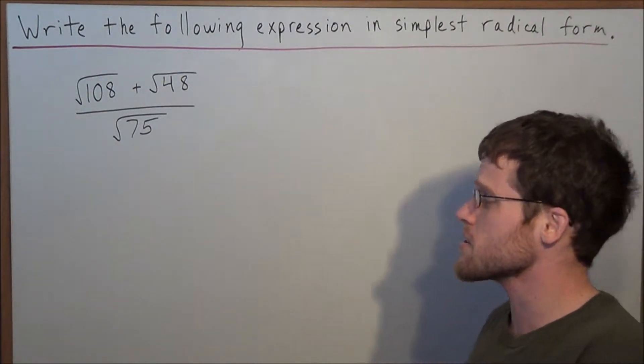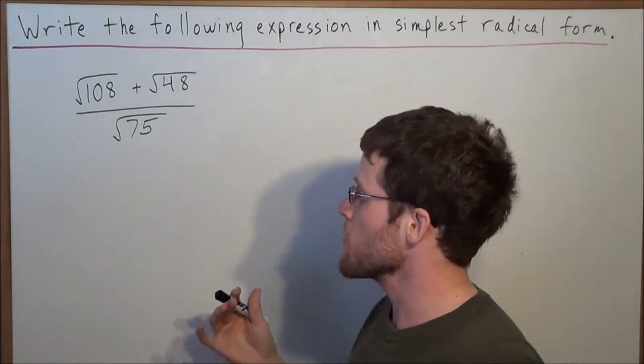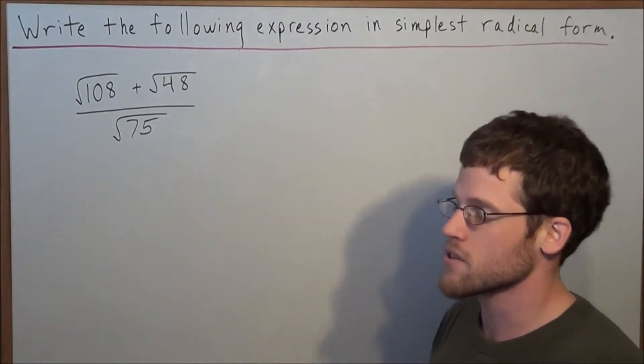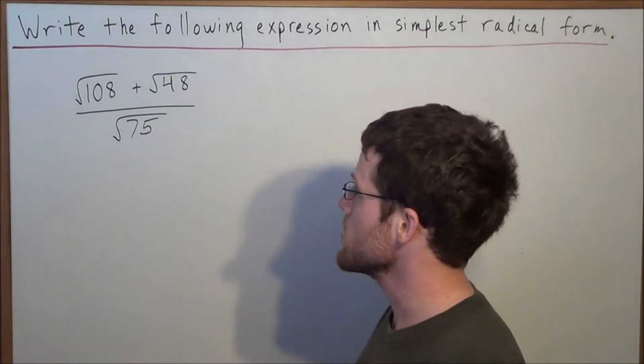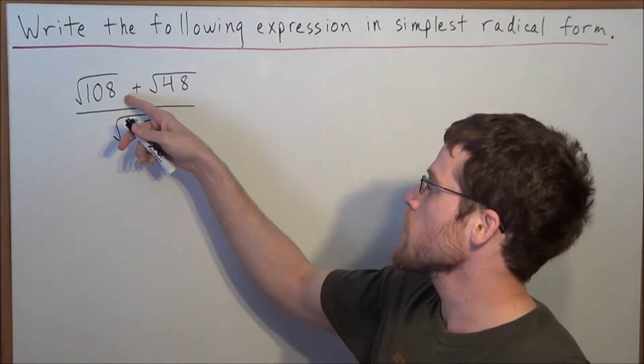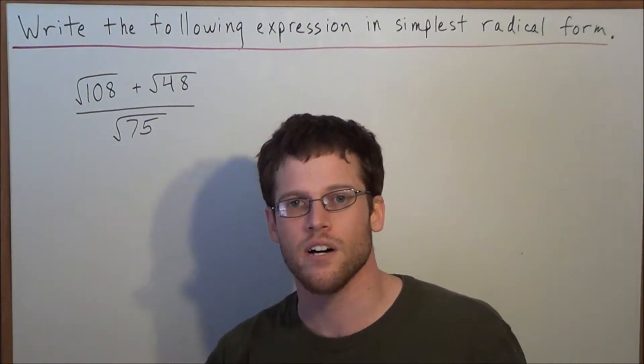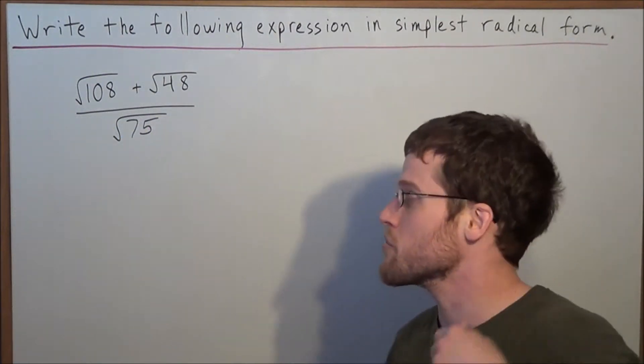Now at first glance, an example like this may make a student snap back, but the key is to break it down systematically. The fact that we have radical 108 plus radical 48 tells us that we're going to be using addition of radicals.